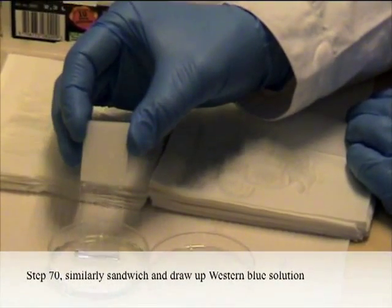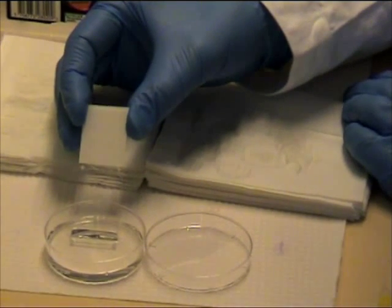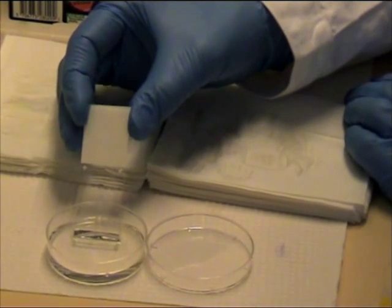Step 70: As before, sandwich and draw up the western blue solution. Notice that the western blue solution is drawn up twice, just as we did for the anti-dig antibody solution in step 65.